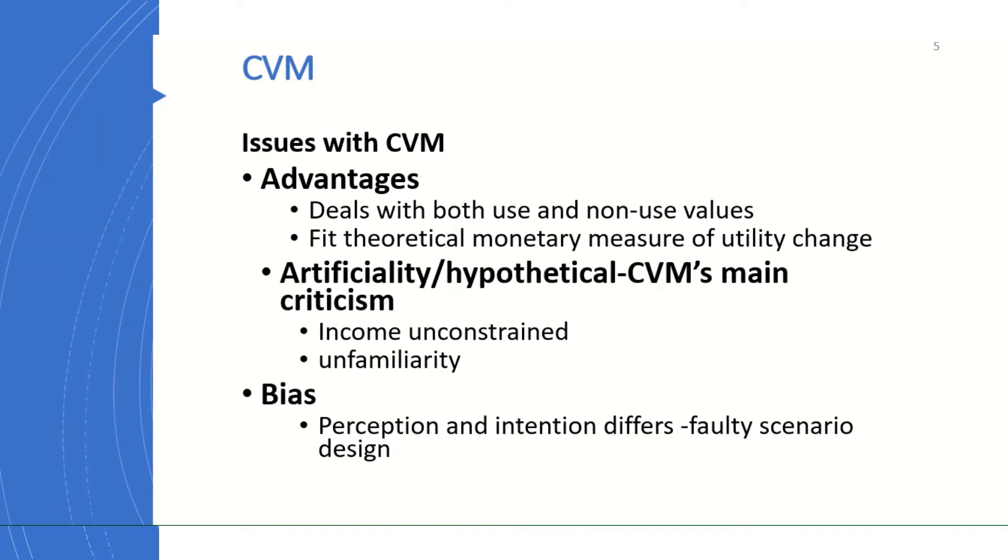Other issues in contingent valuation are biases. Different kinds of biases exist. If you see, sometimes what the respondent perceives and the researcher intends to do may differ, maybe because of faulty scenario design. That is, the good to be valued sometimes may not be clearly described, which could lead to this difference in perception and intention.